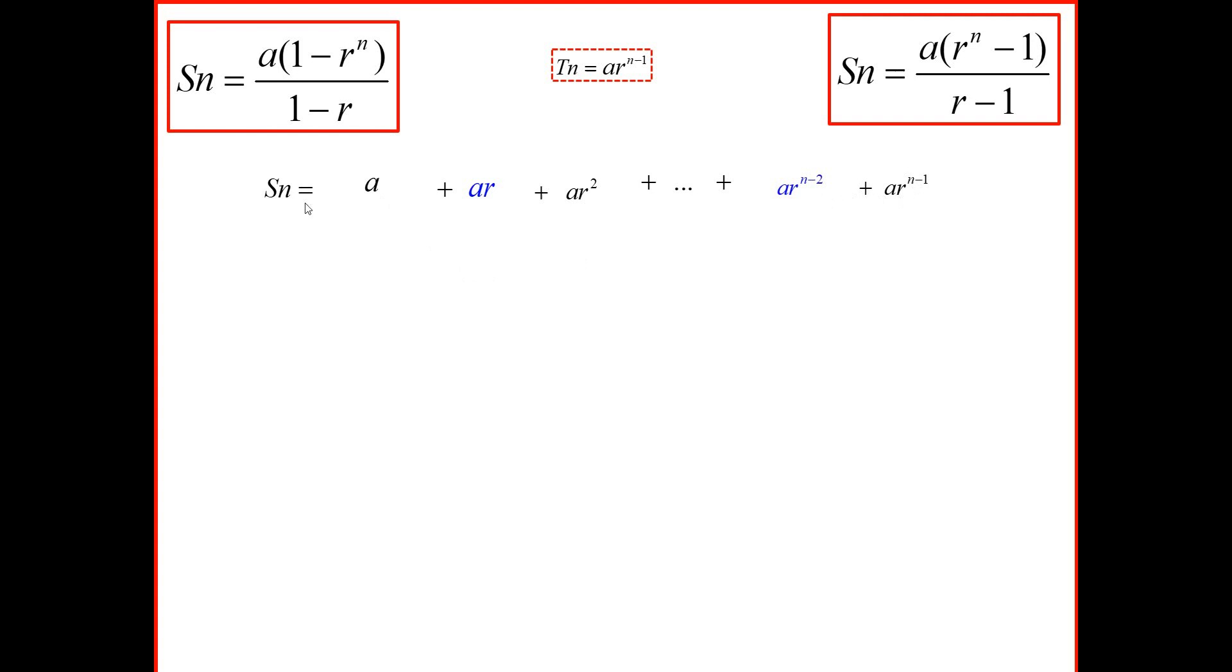We're now going to multiply each term by r. So we're finding r times Sn. If we multiply a by r, we should get ar, but we're going to be strategic. We're going to write ar under ar. If we multiply the next term, which is ar, by r, we'll get ar squared, which we're going to write below its corresponding term. And this pattern will go on.